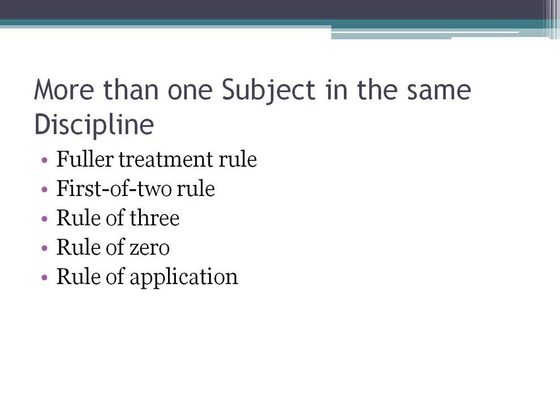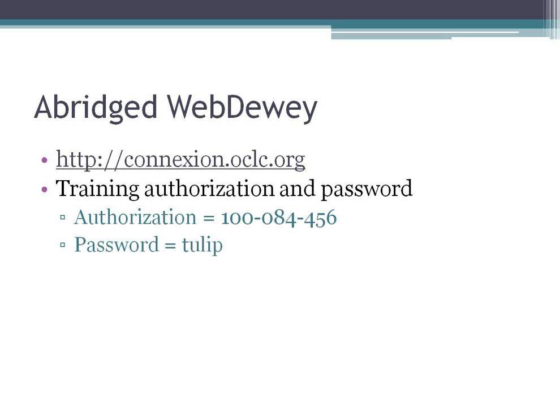Those are the five rules for dealing with more than one subject in the same discipline. If you have questions, feel free to call or email me throughout the week. Now we're going to switch gears and talk about abridged WebDewey. If you choose to use the online interface for your assignments, that's fine. To get to WebDewey, go to connection.oclc.org. The authorization is 100-084-456 and the password is tulip.